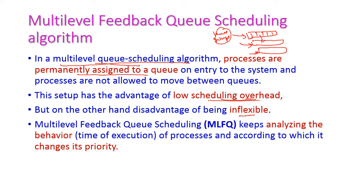To overcome this inflexibility, we introduce the multi-level feedback queue scheduling algorithm. Feedback is introduced here, meaning we analyze the behavior of all queues and scheduling algorithms. Based on that analysis, the process can change its priority. We can change anything based on requirements using multi-level feedback queue scheduling algorithm.